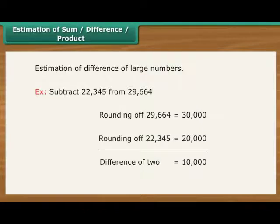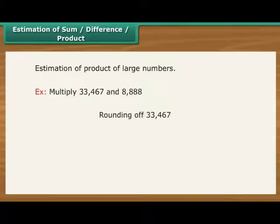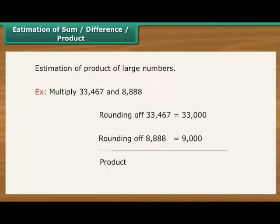Estimation to nearest number can help in the estimation of the product of two large numbers. For example, multiply 33,467 and 8,888. Rounding of 33,467 is equal to 33,000. Rounding of 8,888 is equal to 9,000. Product is equal to 33 into 9 followed by six zeros, which is 29 crore 70 lakhs.